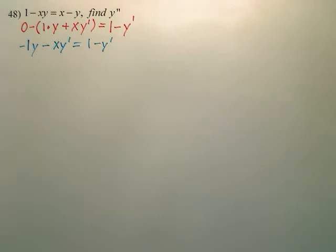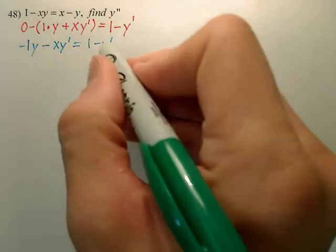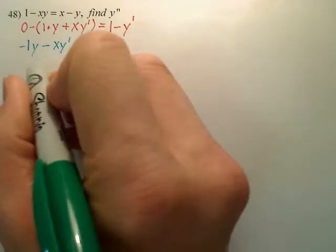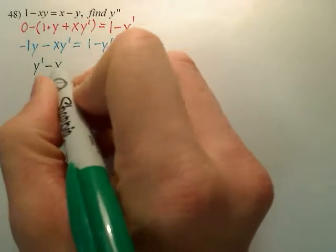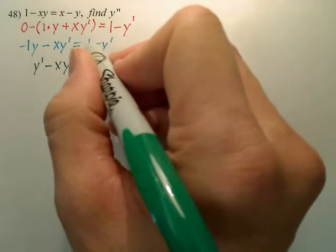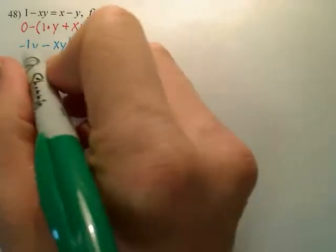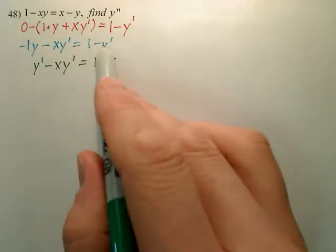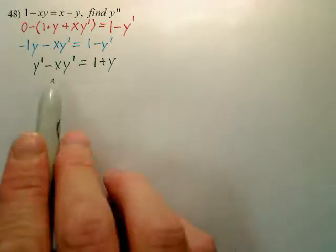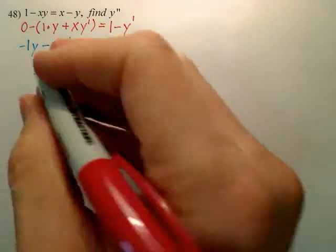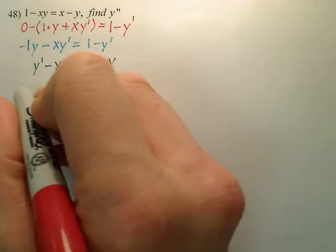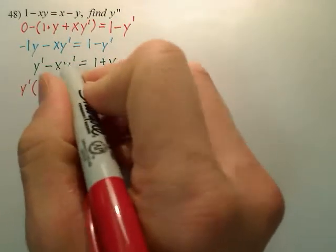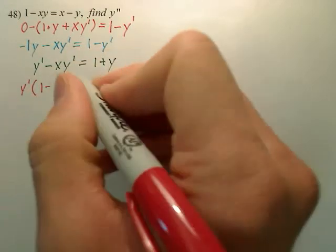So we distribute the negative. Let's move the y primes this way. So when I move this over, I'll get, this adds over, so I have y prime minus xy prime equals, this is a 1, and if I add this over, I have plus y. So I add the y over, and I add this over this way. My next step would be to pull out the y prime, the gcf of y prime, leaving me with 1 minus x. When you pull out of these two a y prime, this is what you're left with.